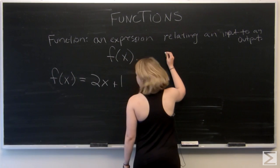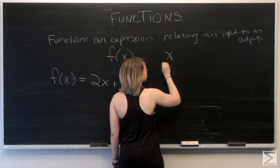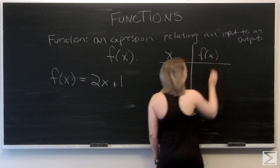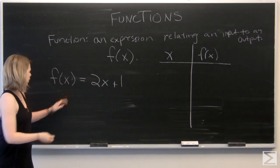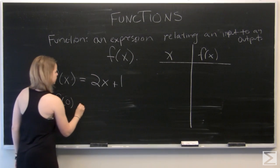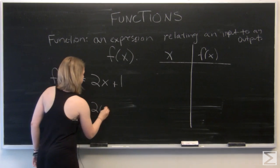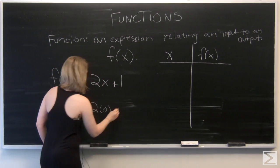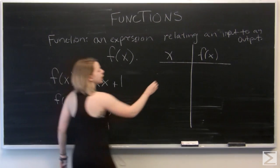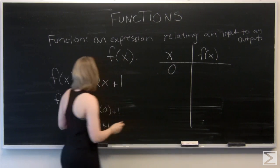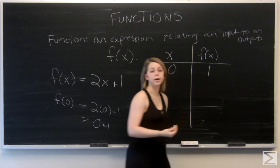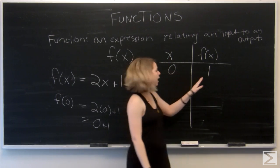So we're going to do a chart. We've got our x values and we've got our f of x values. And so if we plug in 0 for x, we've got f of 0 is equal to 2 times 0 plus 1, which is equal to 0 plus 1. So when we plug in 0 to our function f of x, the result is 1. So 0 was our input and our output is 1.